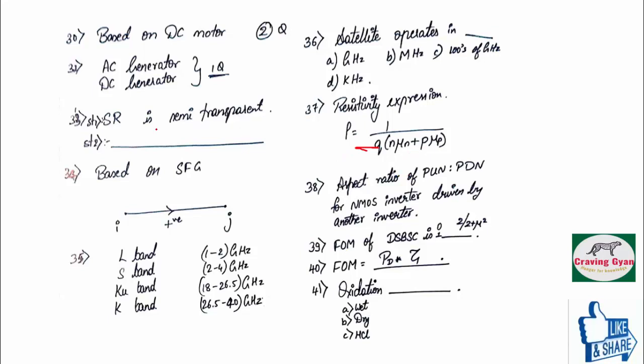Thirty-third question, statement one, they have given, SR is a semi-transparent. And statement two, they have given based on SR only. And thirty-fourth question was based on signal flow graph.